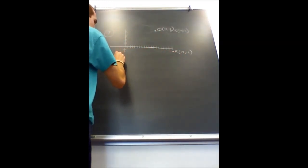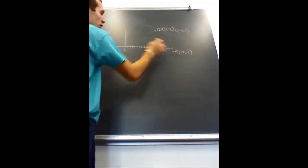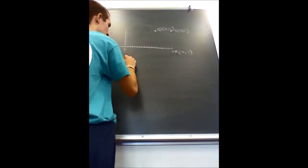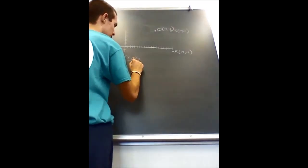It also tells you that P is the center of the circle, which would be the midpoint between Q and R. So you have this formula for a midpoint.